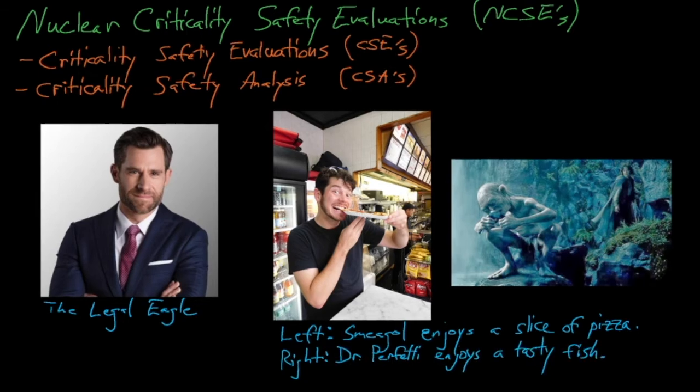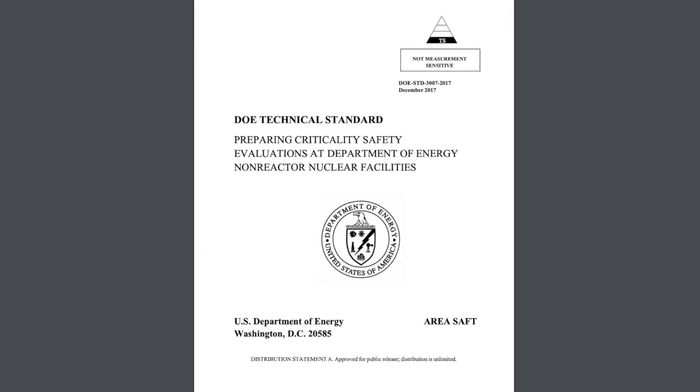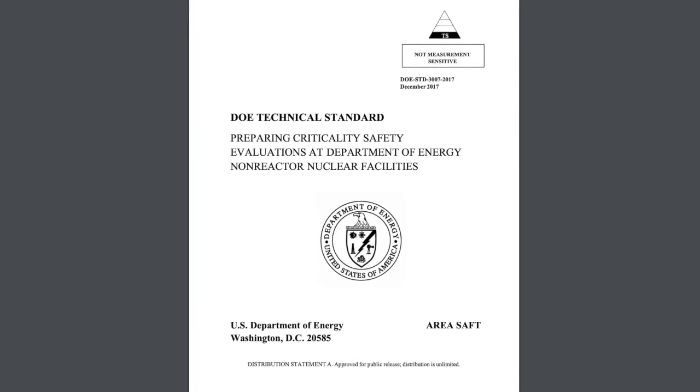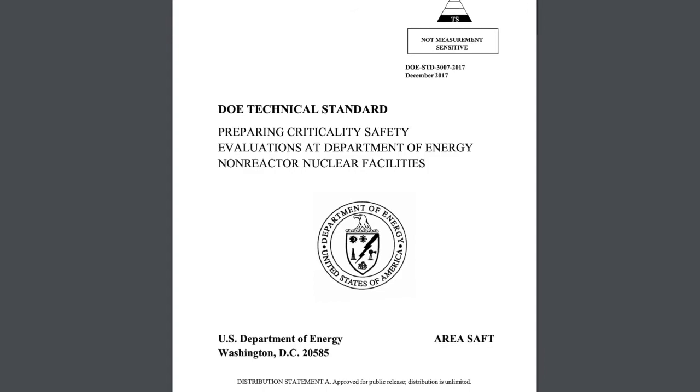As we discuss these criticality safety evaluations, I will be referencing the DOE 3007-2007 standard, which was compiled by a team of criticality safety experts to serve as a guide for preparing criticality safety evaluations in DOE facilities. Facilities will generally have their own specific format for preparing CSEs, but this DOE standard still provides a good overall picture of what should be in a criticality safety evaluation. I've posted a link to this standard in the description for this video.